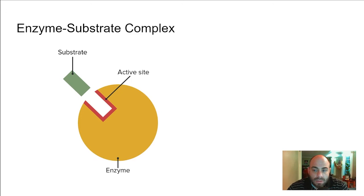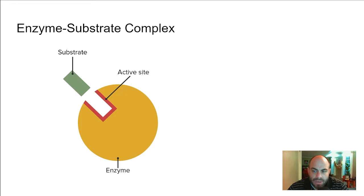We're going to do a lab with an enzyme called catalase, which breaks down hydrogen peroxide. Now let's talk about the enzyme-substrate complex. Anytime you see the word 'complex' in biology it's dealing with multiple things — here it's the enzyme and substrate, plus the active site. The enzyme is a biological catalyst, the substrate is the reactant in an enzyme reaction — the molecule being changed by the enzyme. The active site is where the substrate binds to the enzyme.